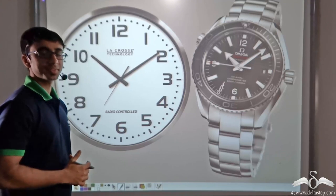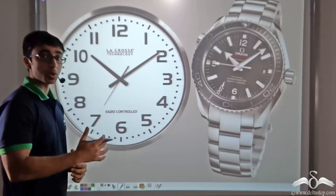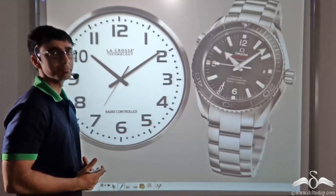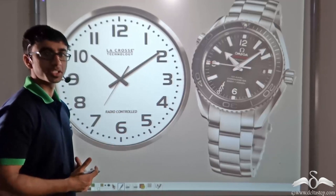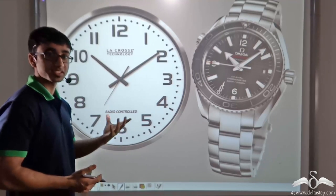In order to measure and find out the time, nowadays we have watches, be it wall clocks or wristwatches. But in ancient times what did people use? Because watches were obviously not there.